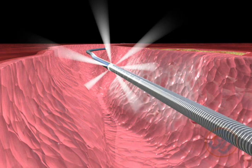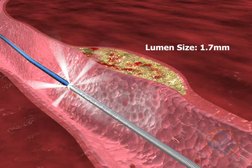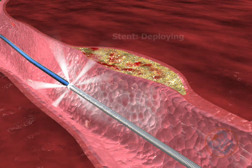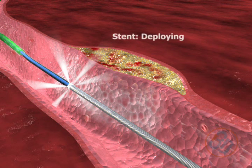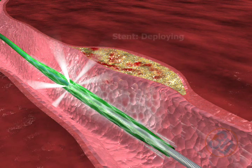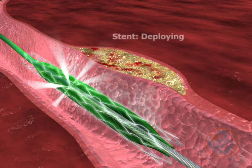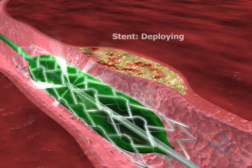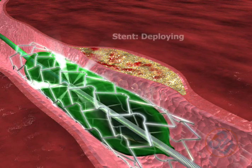In addition, it integrates seamlessly with standard catheter lab procedures, providing real-time monitoring of stent deployment. Data is provided to identify lumen size, shape, and composition. Explora PD can clearly see the interface between the stent and the arterial wall, providing verification that the stent is fully deployed.